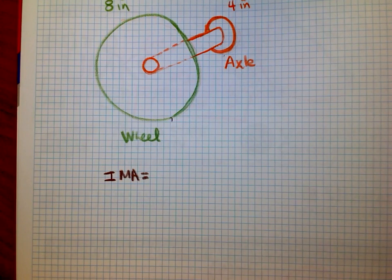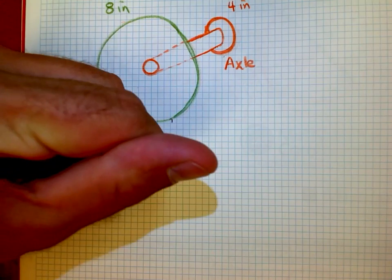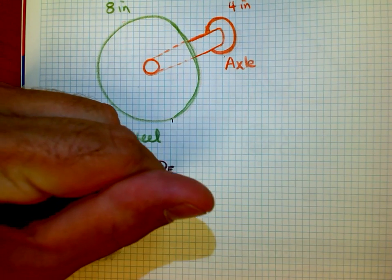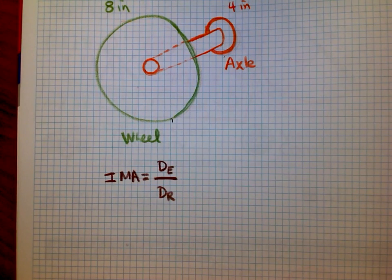And so we would say that's the distance we talked about of the effort arm over the distance to the resistance arm. And with levers, we talked about the distance from the fulcrum to wherever I'm pushing.